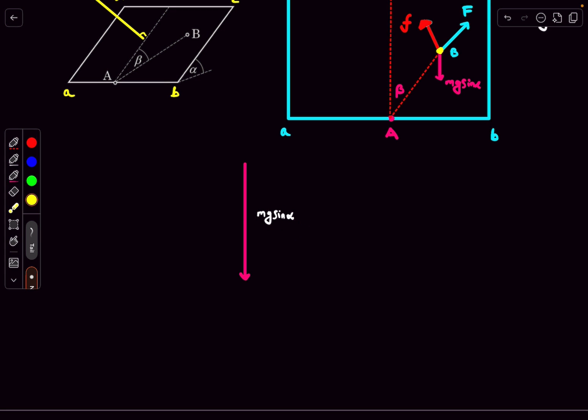The reason for drawing mg sin alpha first is because this is a constant force. It will always be along the same direction and have the same magnitude, whereas the direction of friction and capital F will depend upon where we keep the second charge. Now let's mark down the force of friction. Before we do that, remember there was a condition given to us that mu was less than tan alpha.